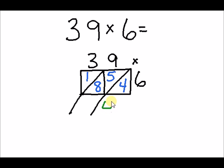So, we have 4 in this column. We have 5 plus 8 is 13. There's the 3. We carry that 1 over to the next column. 1 plus 1 is 2. So, 234.